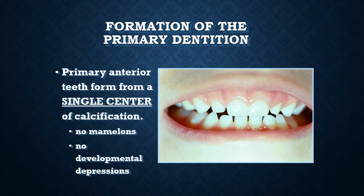Finally, primary anterior teeth usually form from a single center of calcification or lobe. Since they develop from a single center of calcification, there is only one primary part of the tooth, meaning there are no developmental depressions, no developmental grooves, and no mamelons. So in primary anterior teeth, we don't see any mamelons or developmental depressions.